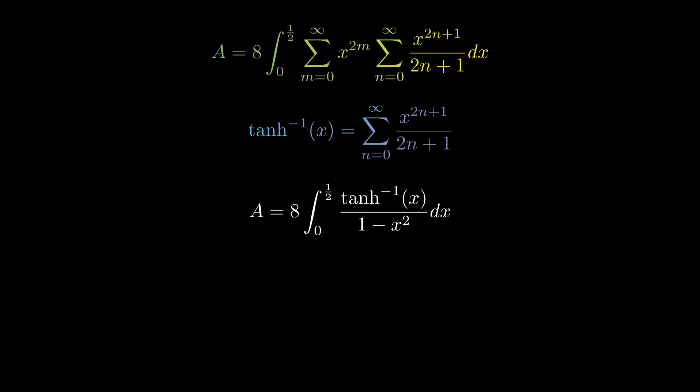Step 4: Evaluating the Integral. Now, our integral takes on a new form: A equals 8 times the integral from 0 to 1 half of Arctan of x, divided by 1 minus x squared, with respect to x.